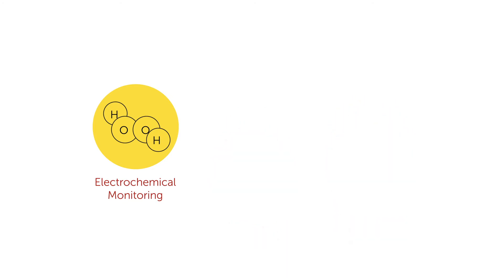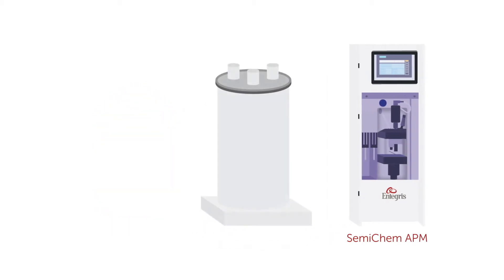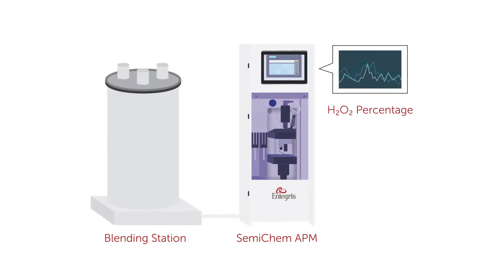First, electrochemical analysis happens during CMP blending using the Semi-Chem Advanced Process Monitor. The Semi-Chem Monitor connects directly to the blending station and automatically samples, analyzes, and provides data that helps control slurry composition.